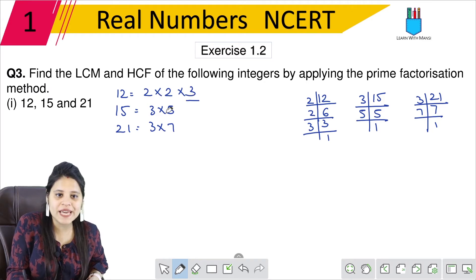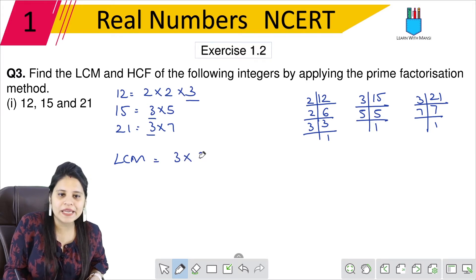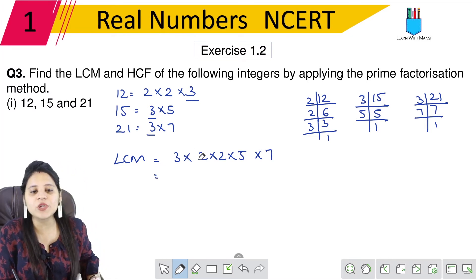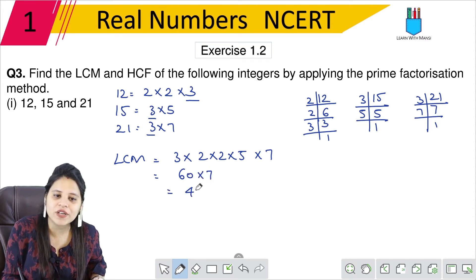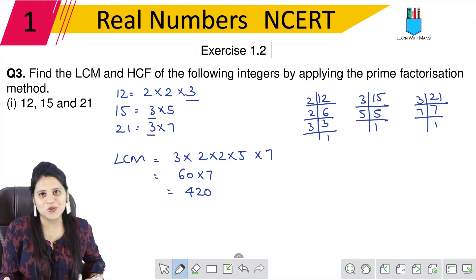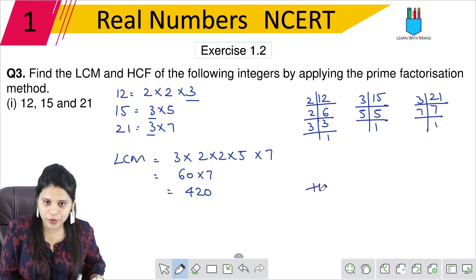12's factors will be 2 × 2 × 3. 15's factors will be 3 × 5. And 21's factors will be 3 × 7. So what is common? Only 3 is common. So when we find LCM, we will take 3 only once. And the rest is 2 × 2. In the second, there is 5. In the third, there is 7. So let's multiply this. 3 × 2 is 6, 6 × 2 is 12, 12 × 5 is 60 × 7. So 60 × 7 is 420. So LCM is 420.